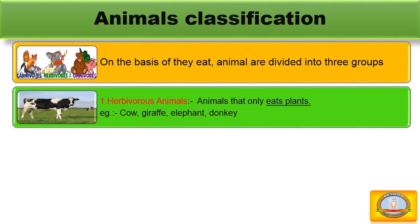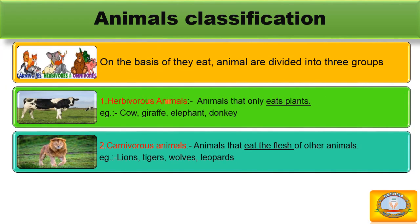Second: Carnivorous animals. Animals that eat the flesh of other animals are called carnivorous animals. Lion, tiger, wolf, and leopards are carnivorous animals.